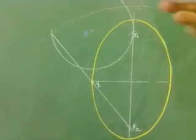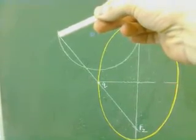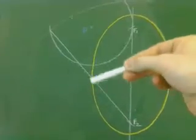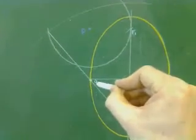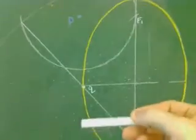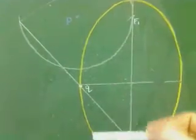So I've just done that now. I've joined this point back to the far focal point. And where it crosses the ellipse, this is the point I'm looking for. Point Q is the point of contact between this tangent that I'm going to draw and the yellow ellipse.